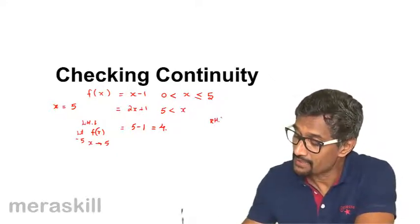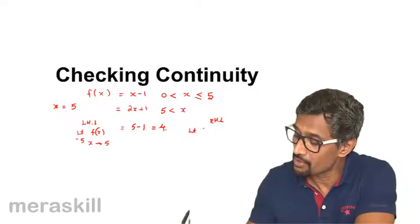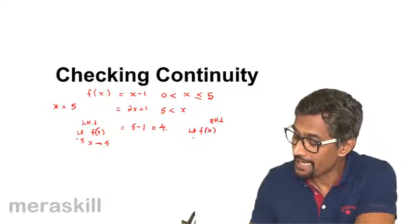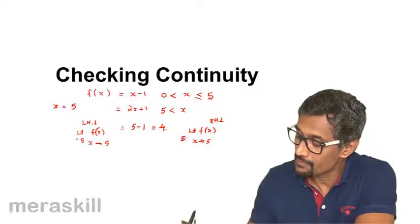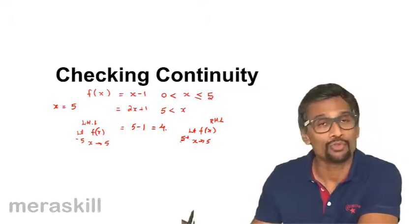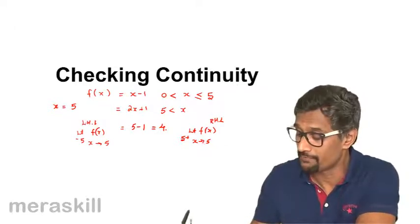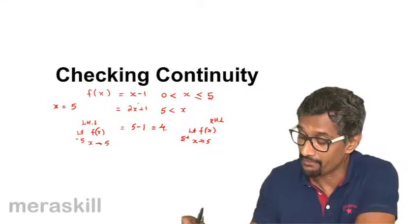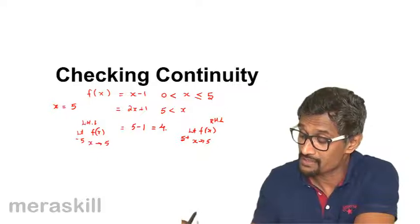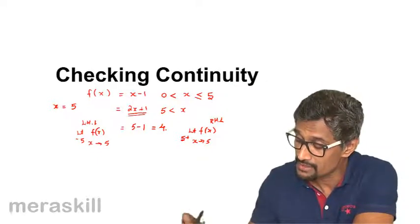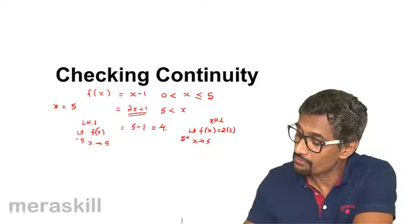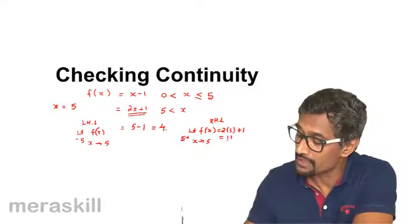Now let us consider the right-hand limit. The right-hand limit will be the limit of f(x) as you approach 5 from the positive side. That means you approach towards 5 from a small value more than 5. So in that case, whenever x is greater than 5, you would consider this, so it's going to be 2 into 5 plus 1, that is 11.